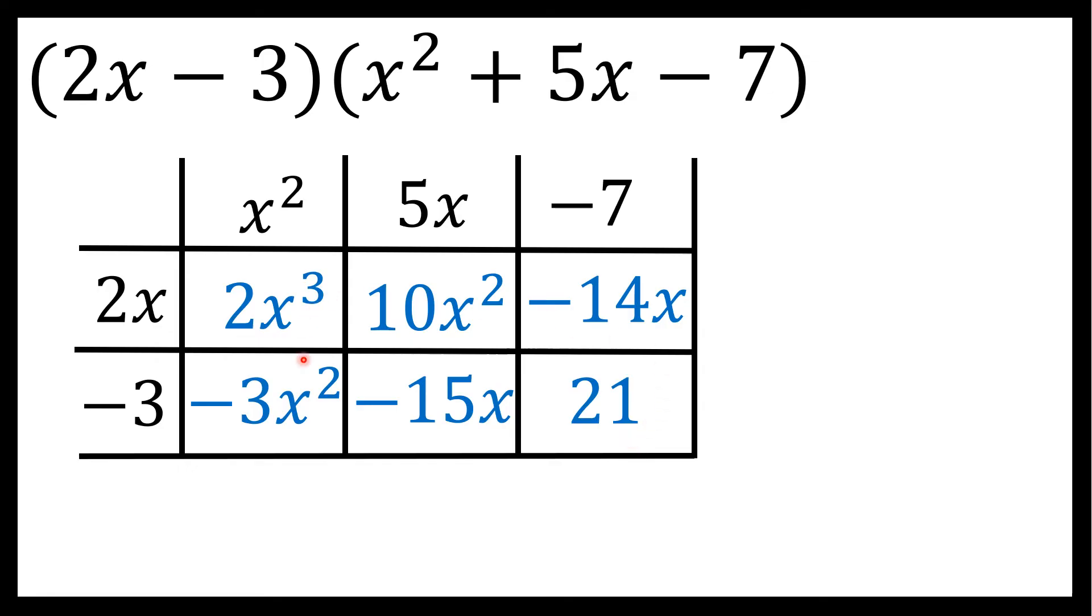The values in these six boxes represent our answer. However, some of them are like terms, and before I call it my final answer, I'll combine the like terms. In the first row of the first column, I have 2x to the third, and there are no other x to the third terms in any of the other boxes. So 2x to the third is one of the terms in my final answer.